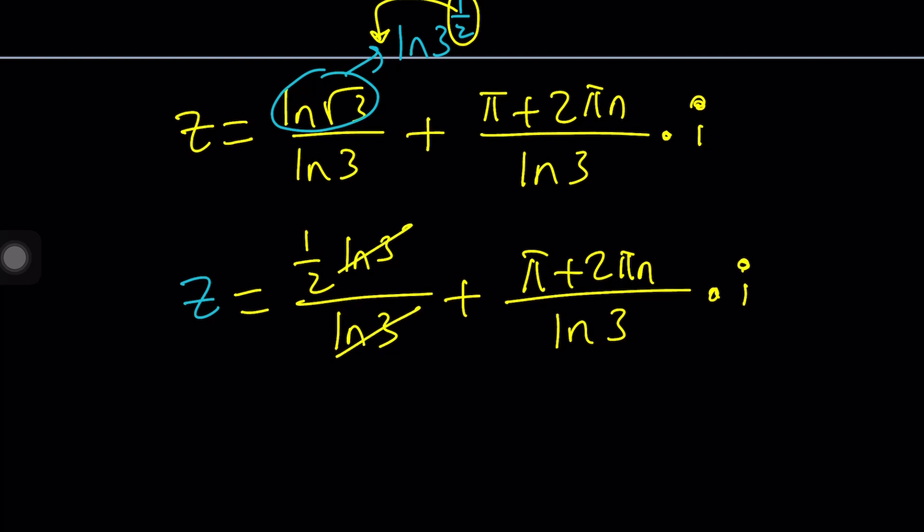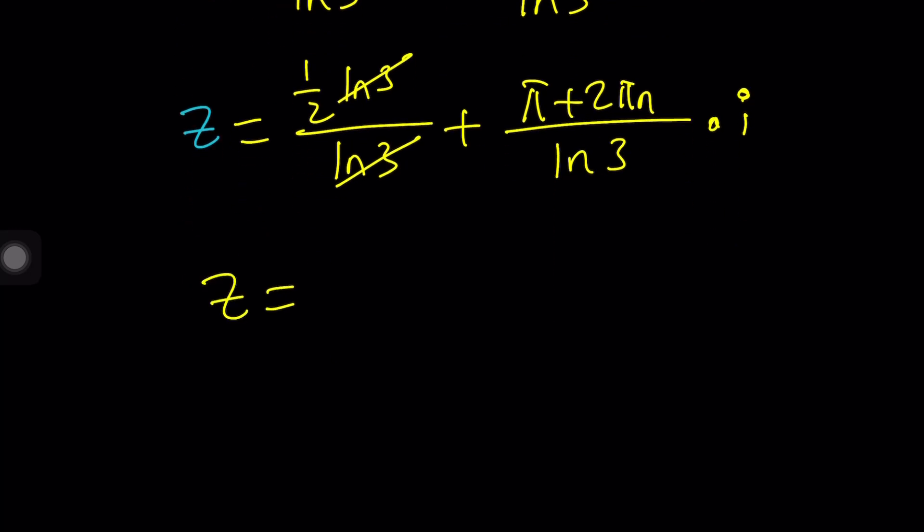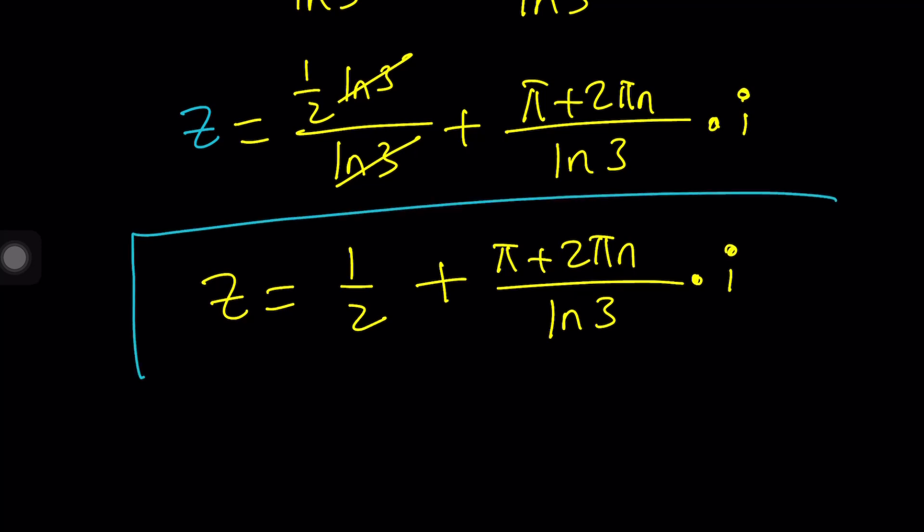Because ln 3 cancels out and we end up with a rational number, which is kind of interesting. When ln 3 cancels out, we end up with 1 half and then a piece that is imaginary. That's going to be the answer. So that's z in the simplest form.